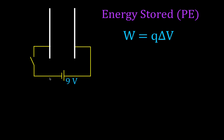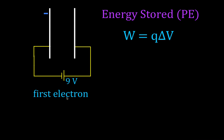Here we have a 9-volt battery, a switch, and a schematic of a capacitor — these are the parallel plates. We're going to take one unit of charge Q, which is the electron, and move it from one plate to another. When I close the switch, the charges start to move, and we're going to look at this one electron at a time. The first electron gets moved from one plate through the battery and to the other plate. The amount of work done is equal to Q, the charge, times the potential difference through which that charge is moved.